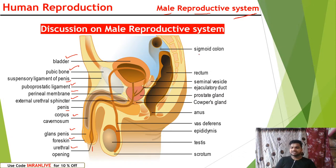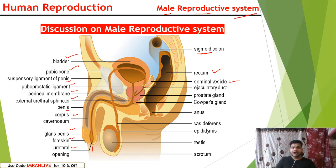In the posterior region we have the sigmoid colon and rectum — we will discuss those deeply in digestion and absorption. Here we just understand what structures are situated near the male reproductive region. This is the anterior front region and the posterior back region. We have seminal vesicles which release semen, and the ejaculatory duct which stimulates the penis during sexual intercourse. It is connected with the human brain. When a male gets sexual arousal, the ejaculatory duct stimulates and helps release sperm through the urethra.